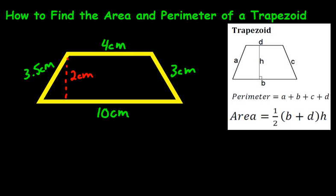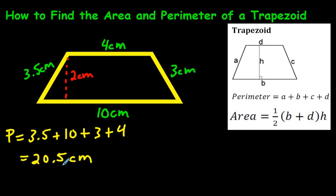For the perimeter, we don't need the height. All we need, according to this formula, is to add up the sides. So we'd go 3.5 plus 10 plus 3 plus 4. Our final answer would be 20.5 centimeters. That is the distance around this shape, which is the perimeter.